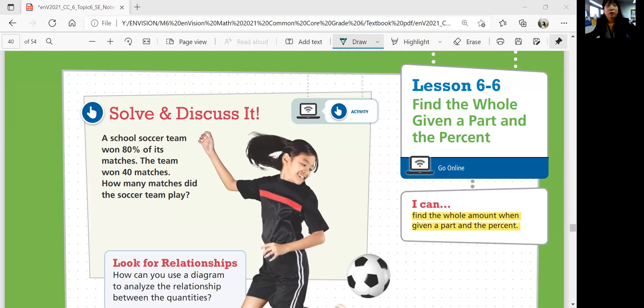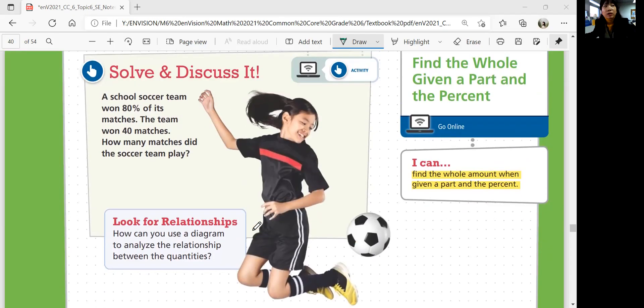So let's look at solve and discuss it. A school soccer team won 80% of its matches. The team won 40 matches. How many matches did the soccer team play? We are not given how many the whole is, right? How many total the soccer matches are. But we're given other information: 80%, the percentage, and 40, which is the part related, corresponding to the percentage.